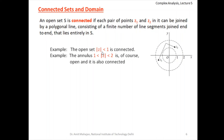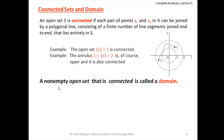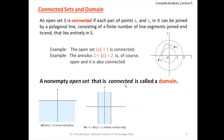The open set |z| < 1 is also connected: any two points inside can be joined directly without leaving the region. A non-empty open set that is connected is called a domain. Being open means no boundary points are included, and being connected means any two points can be joined by a finite number of straight line segments end to end within the set.